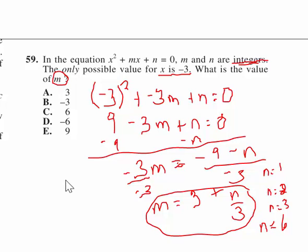All right. Let's keep going up. n equals 7, that doesn't work. n equals 8, nope. How about n equals 9? If n equals 9, m equals 3 plus 9 over 3, which equals 6. m equals 6, which is our answer choice, C.